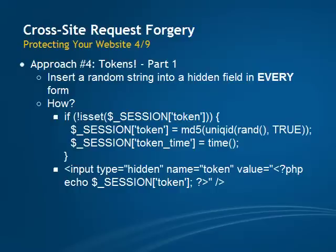The first line checks whether or not a token has been set during this session. The second line creates a new token, and the third line saves the current time. You then insert this token with a hidden form field into your form, as shown here.